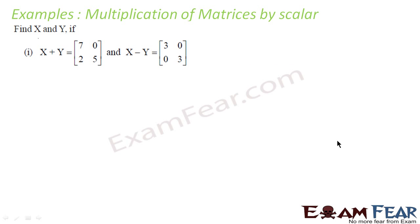Let's take one more example. Matrix X plus matrix Y is equal to [7 0; 2 5] and matrix X minus matrix Y is equal to [3 0; 0 3]. Both are of order 2×2. We have to find the value of X and Y — that is, we have to find matrix X and matrix Y.